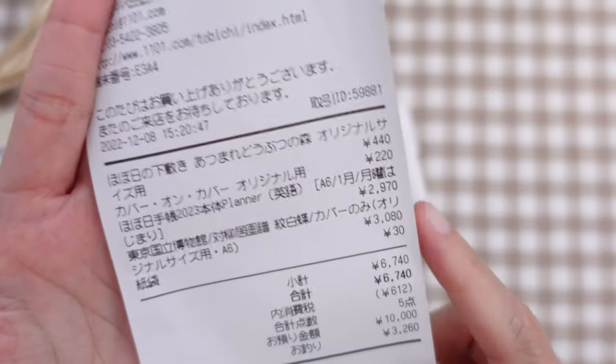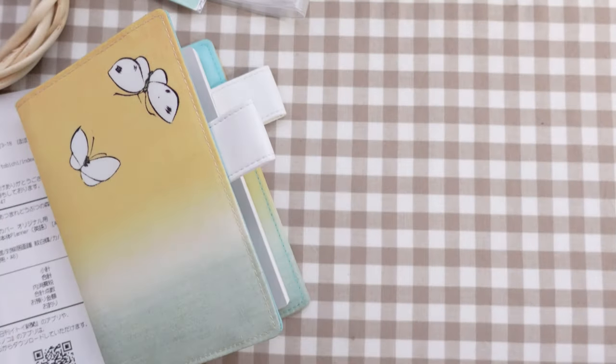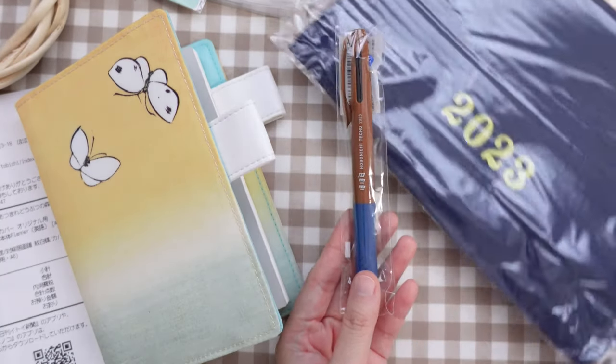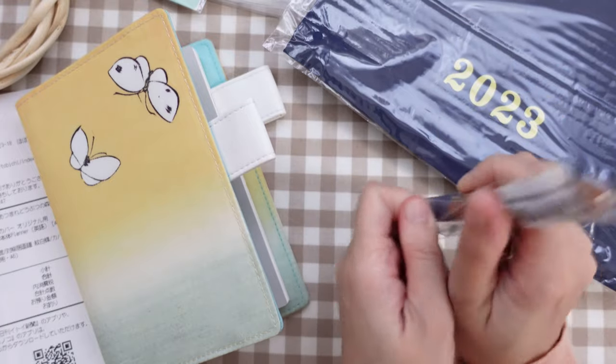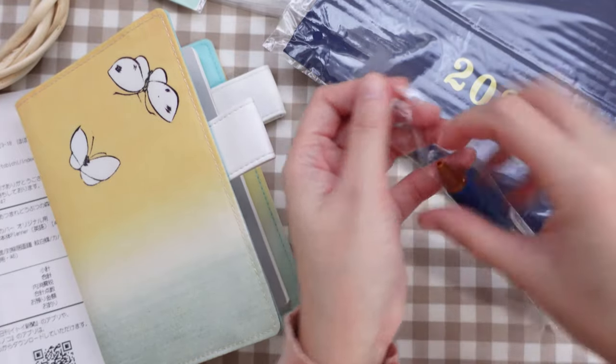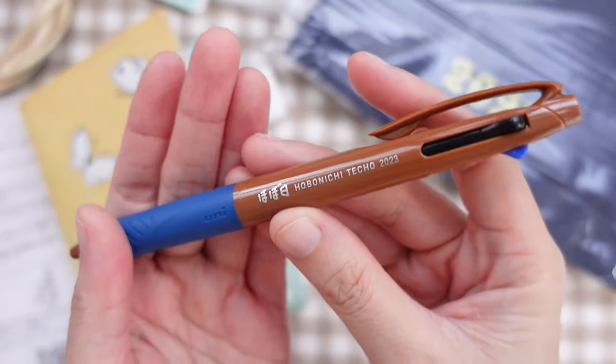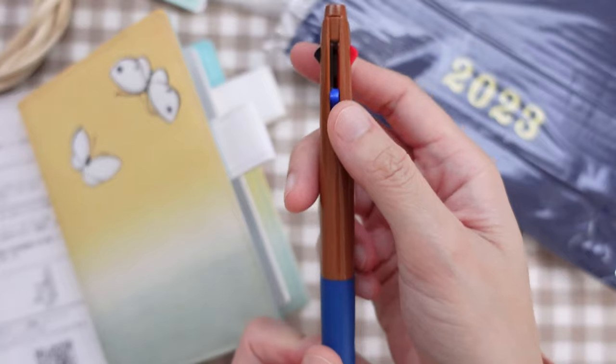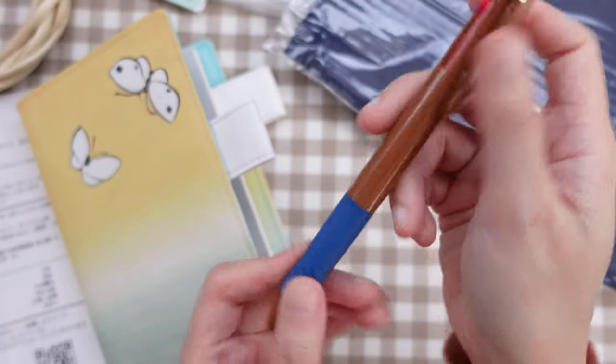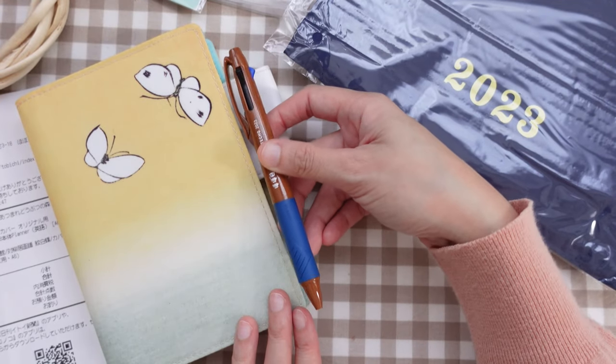So I have my receipt here, and the cover costs 3,080 yen, and the planner costs 2,970 yen. So I also got the free pen and bag. Let's check the pen. All right. So this is the free Hobonichi Techo pen. It comes in three colors. We have black, blue, and red.